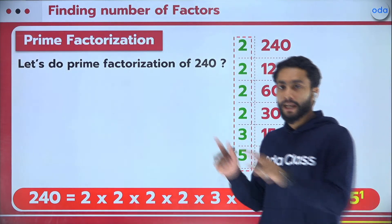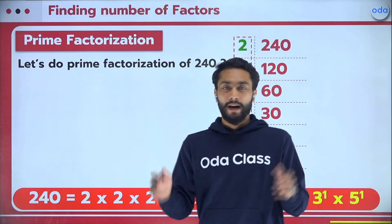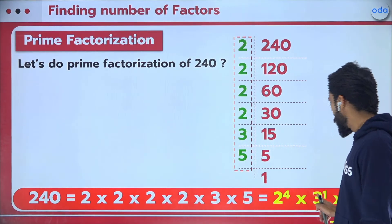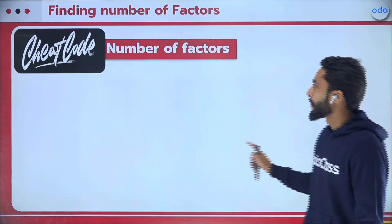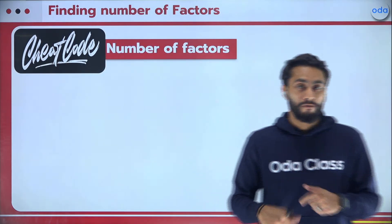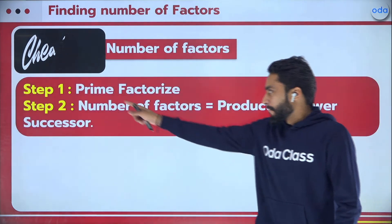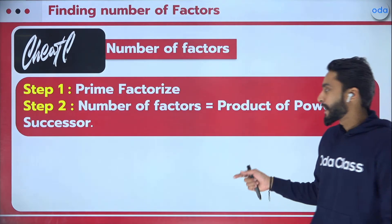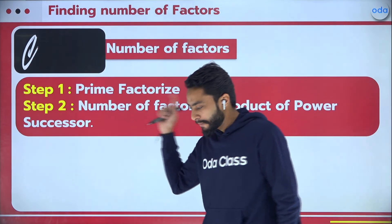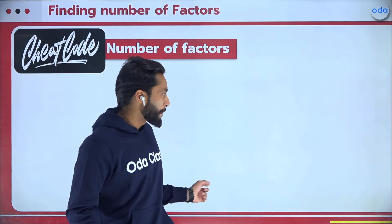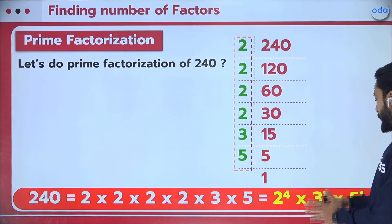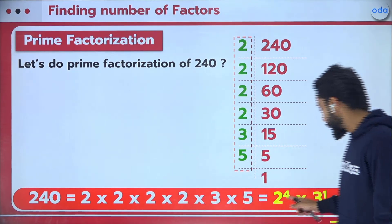So 240 can be written as 2 to the power of 4, times 3 to the power of 1, times 5 to the power of 1. The powers are 4, 1, and 1. Now are you ready for the cheat code? Here is the formula for finding the number of factors: the product of the successors of the powers.